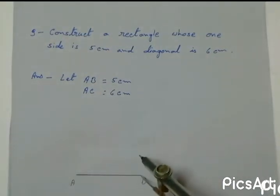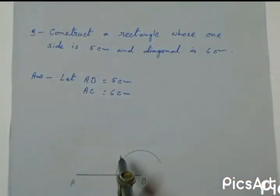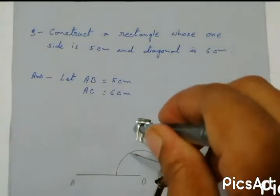The value of each angle of a rectangle is 90 degrees. So at the point B I am drawing a 90 degree angle.